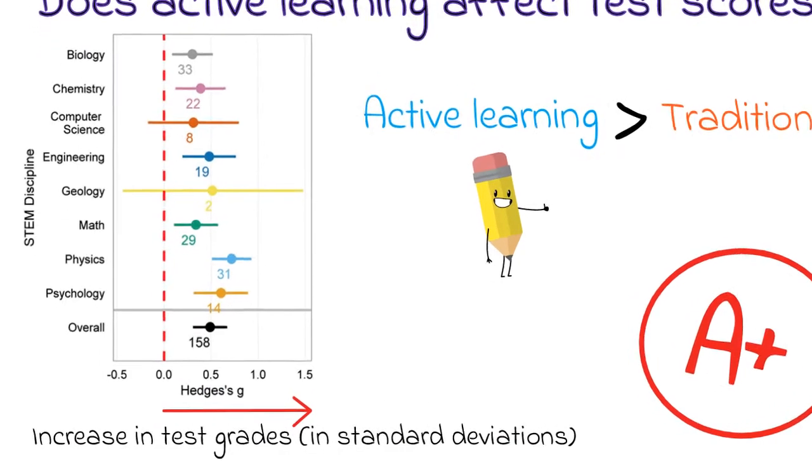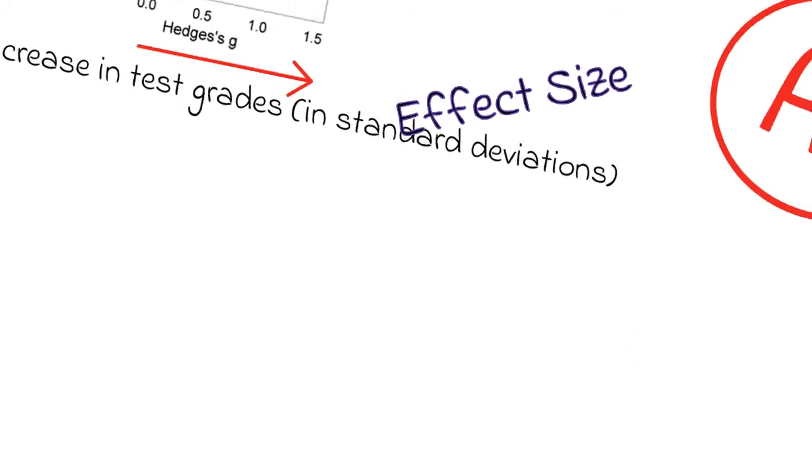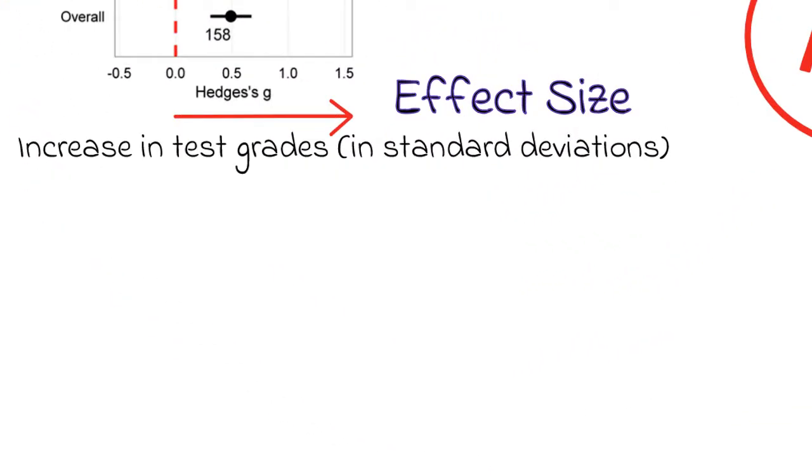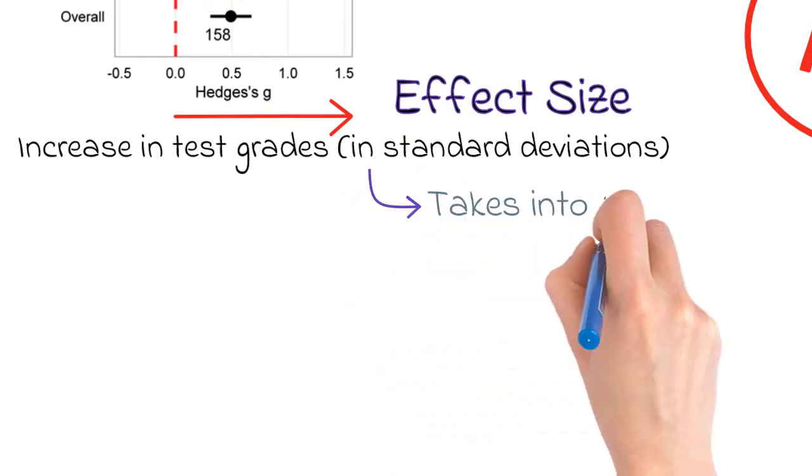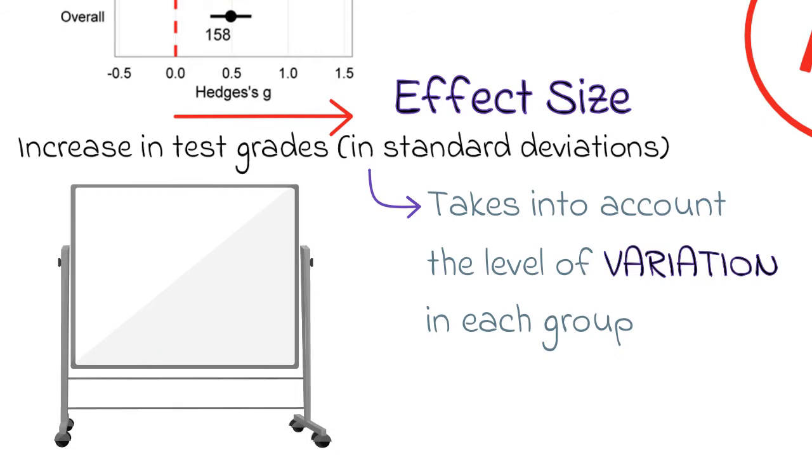Now, describing the difference in test scores in terms of standard deviations, called effect size, is perhaps a kind of abstract way to think about it, but it makes sense when dealing with a bunch of different topics and test types, like in this case. So let's take a minute to figure out what it actually means to increase test scores by half a standard deviation.